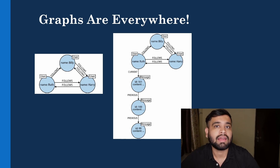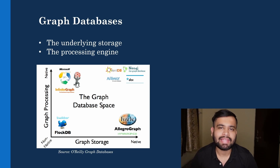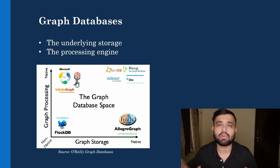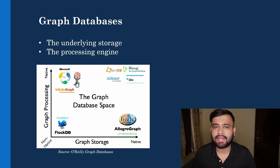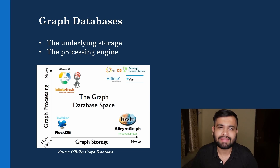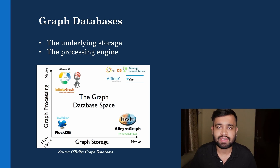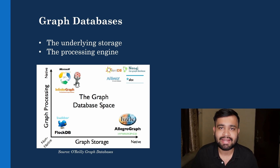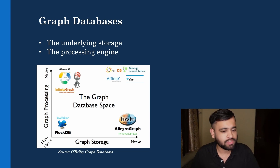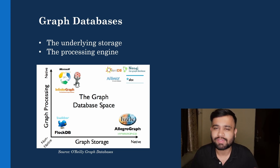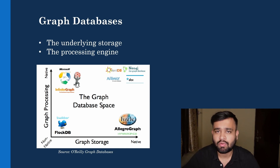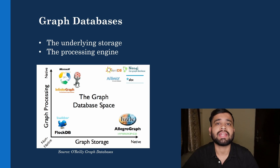At a high level, graph databases are online database management systems that provide CRUD capability — Create, Read, Update, and Delete operations. They are mostly suitable for OLTP use cases, built with transactional optimization in mind, and provide good transactional integrity like ACID-compliant relational databases. There are two important topics: the underlying storage and the processing engine.